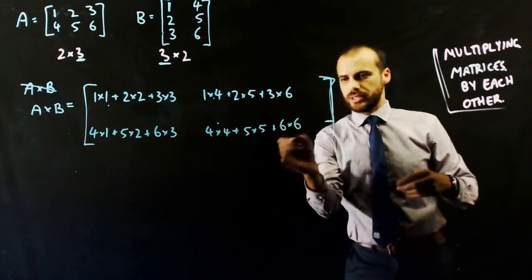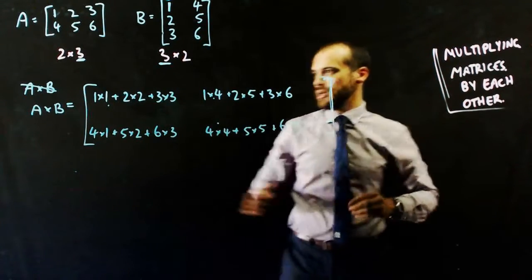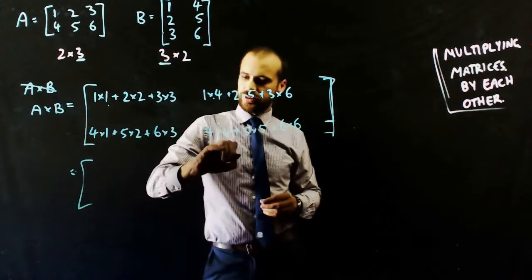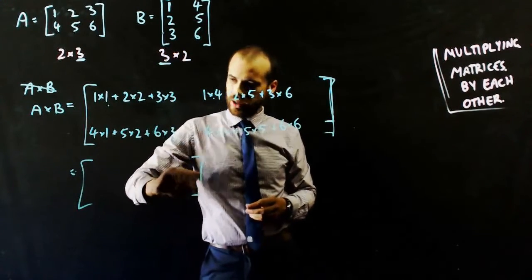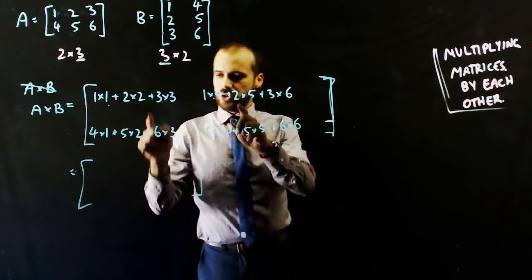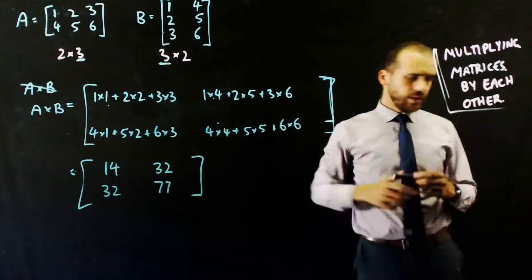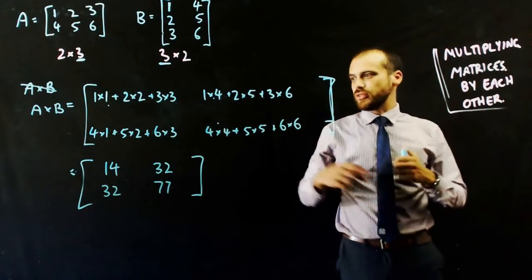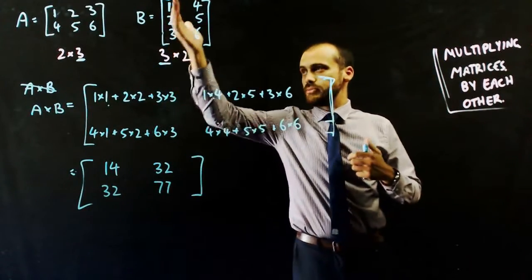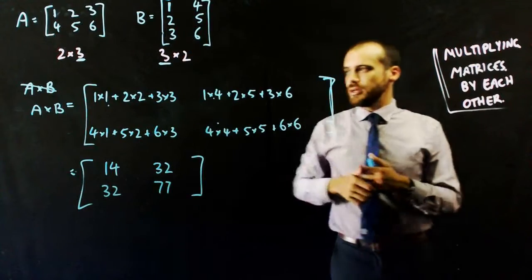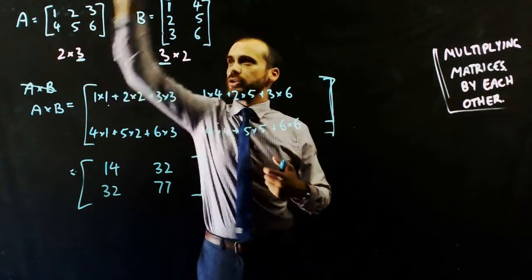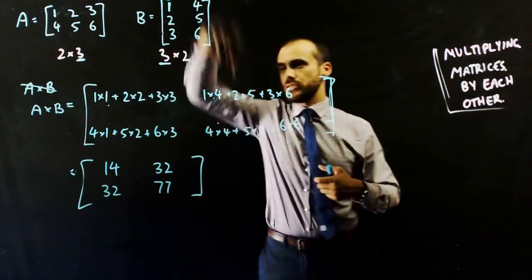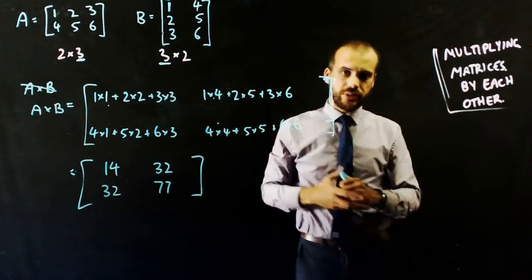My brackets are getting a bit skew-whiff, but you see what's going on. Get yourself a calculator, add all of that up, and you should get 4 elements nice and easy. The result is 14, 32, 32, 77 — that is A times B. Row times column, row times column, row times column, row times column — that's how you get your elements.